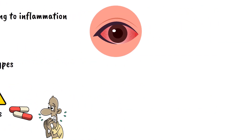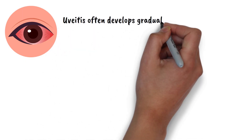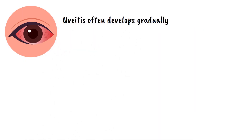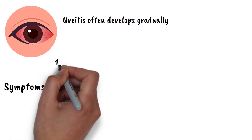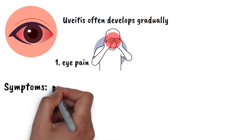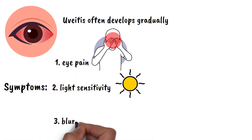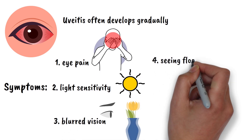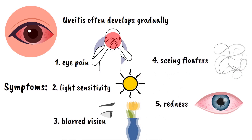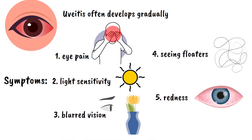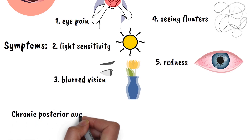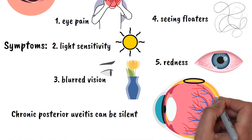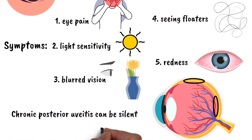What makes uveitis particularly concerning is that it often develops gradually and can cause permanent damage before you realize something is wrong. Symptoms can vary depending on which type you have, but common signs include eye pain, light sensitivity, blurred vision, seeing floaters, and redness. However, some forms — particularly chronic posterior uveitis — can be essentially silent, causing progressive vision loss without obvious symptoms.